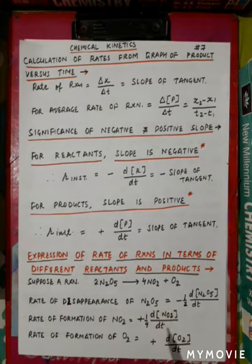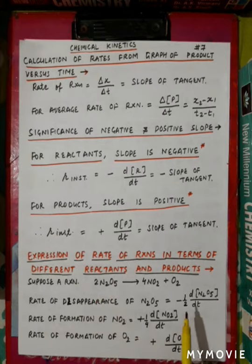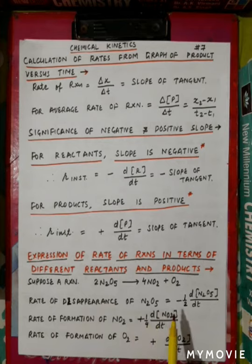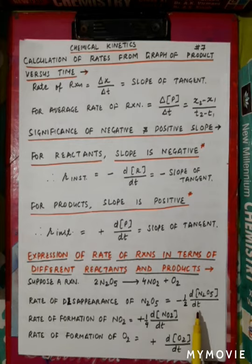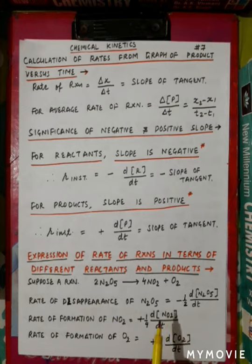One important thing: the molar concentration of reactant must be divided by its stoichiometry. N2O5 has stoichiometry 2, so we write 1 upon 2 times the change in molar concentration of reactant upon time. This means the molar concentration of reactant is decreasing. We divide by the stoichiometry, and the negative sign indicates that the concentration of reactant is decreasing.